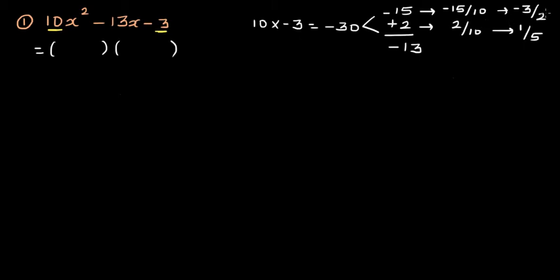And 2 divided by 10 simplifies to 1 over 5. Now the trick is: the bottom number tells you the coefficient of x, and the top number tells you the constant. So for negative 3 over 2, the factors give you 2x minus 3. For 1 over 5, the 5 becomes the coefficient of x in the second bracket, giving 5x plus 1.